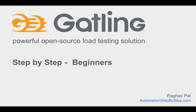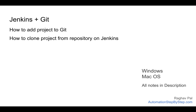Hello and welcome, I'm Raghav. Today we are going to see how we can add our project to a version control system, that is Git, and then we will learn how we can clone our project from our Git repository in Jenkins and then use that cloned project to run our Gatling tests. This is going to be very easy and very interesting.